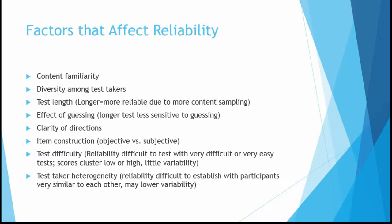Test difficulty also matters. Reliability is difficult to establish if we have very difficult or very easy tests. If a test is very difficult, scores cluster on the low side, which makes it hard to see variability and whether the test performs as it should. Test taker heterogeneity — how similar test takers are to each other — also plays a role. If a group is very homogenous, similar to a very difficult test, we may not see a lot of difference between scores, making it harder to calculate reliability.